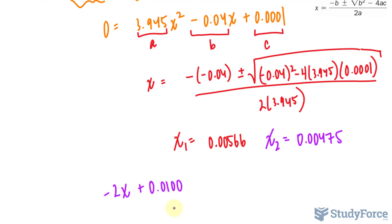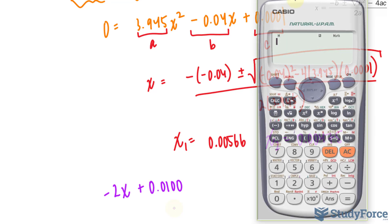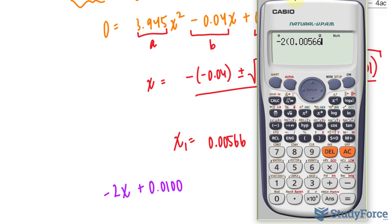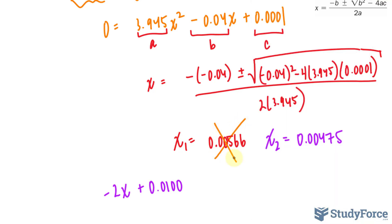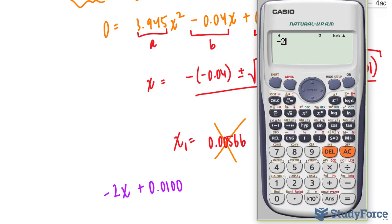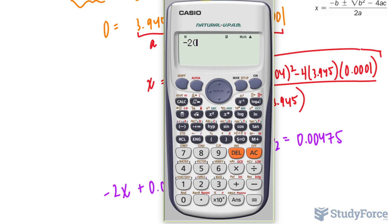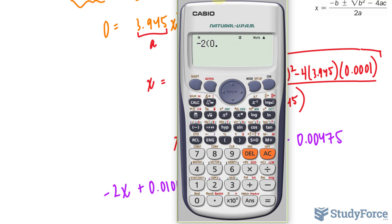Whichever output is positive, that's the correct X value that we'll use. We have negative 2 times 0.00566, plus 0.0100, and we end up with a negative output. So right away, we know that this can't be correct.